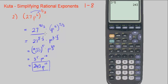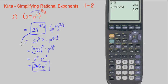We could also put this into our calculator: 27 to the power of 5 divided by 3, in parentheses, so it takes it to the power of 5 over 3. Otherwise it would take it to the power of 5 and then divide by 3. Either way, we also get 243.